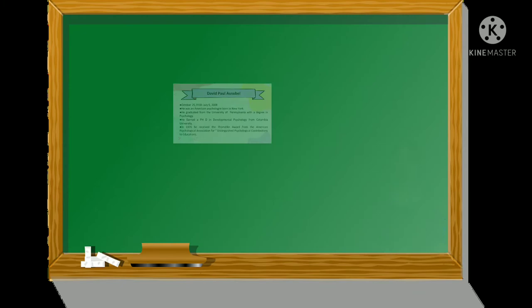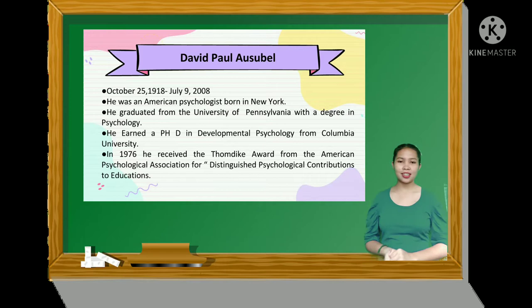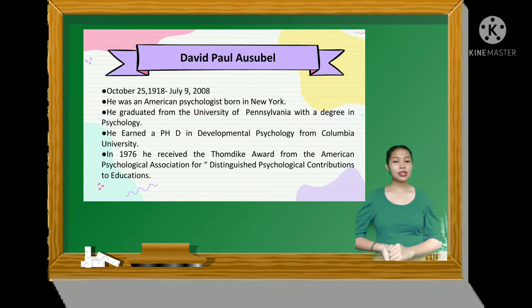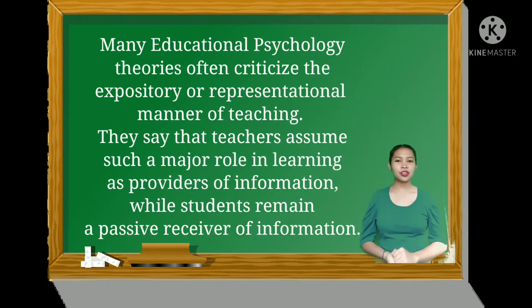David Paul Ausubel was born in New York on October 25, 1918, and passed away on July 9, 2008. He graduated from the University of Pennsylvania with a degree in psychology. In 1976, he received the Thorndike Award from the American Psychological Association for Distinguished Psychological Contribution to Education.